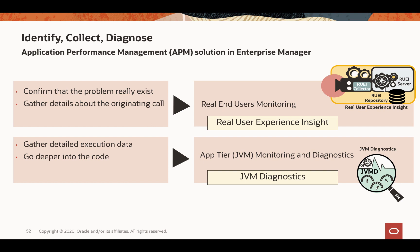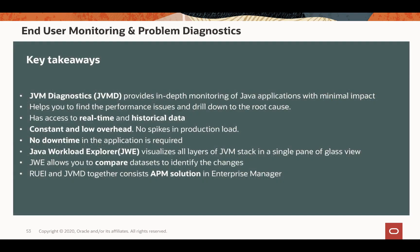JVM Diagnostics works best with RUI, and together they offer an APM solution in Enterprise Manager. First, use RUI to identify the problem and gather related information, then pass it to JVM Diagnostics and go deep into the code. Key takeaways: JVM Diagnostics provides in-depth monitoring of Java applications with minimum impact, helps find performance issues and drill down to root cause, provides real-time and historical data, has constant low overhead with least impact to production, requires no downtime to use. Java Workload Explorer visualizes all JVM stack layers and allows comparison of current versus baseline workload to identify root causes. RUI and JVMD together form the APM solution in Enterprise Manager.